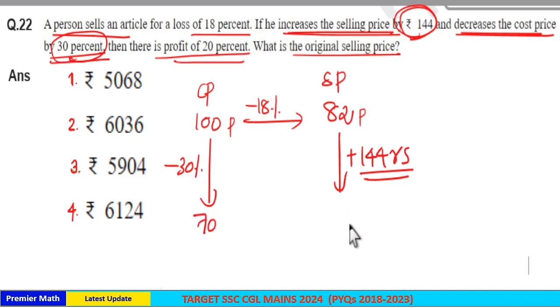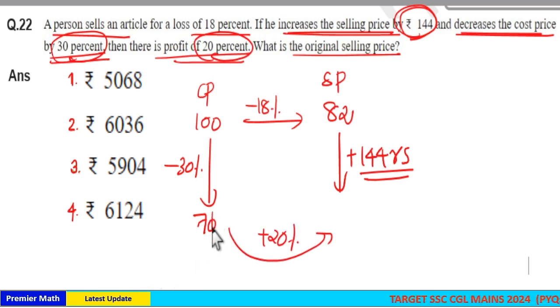Now, when he does that, his profit is 20%. So, take 20% profit from the 70 part. 10% of 70 is 7. 20% is 14. So, 70 plus 14 is 84 part is the current selling price. But here,